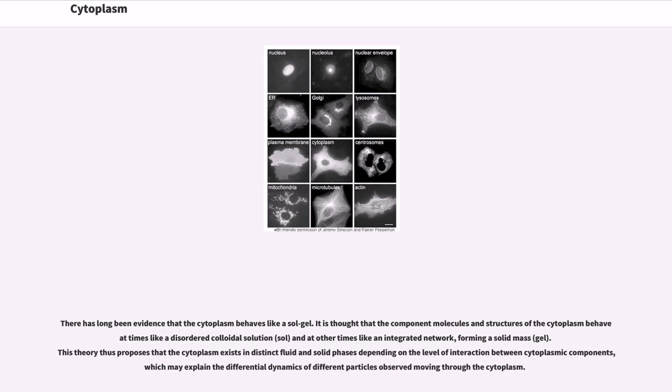The irregular dynamics of such particles have given rise to various theories on the nature of the cytoplasm. There has long been evidence that the cytoplasm behaves like a solid gel. It is thought that the component molecules and structures of the cytoplasm behave at times like a disordered colloidal solution, sol, and at other times like an integrated network, forming a solid mass, gel.